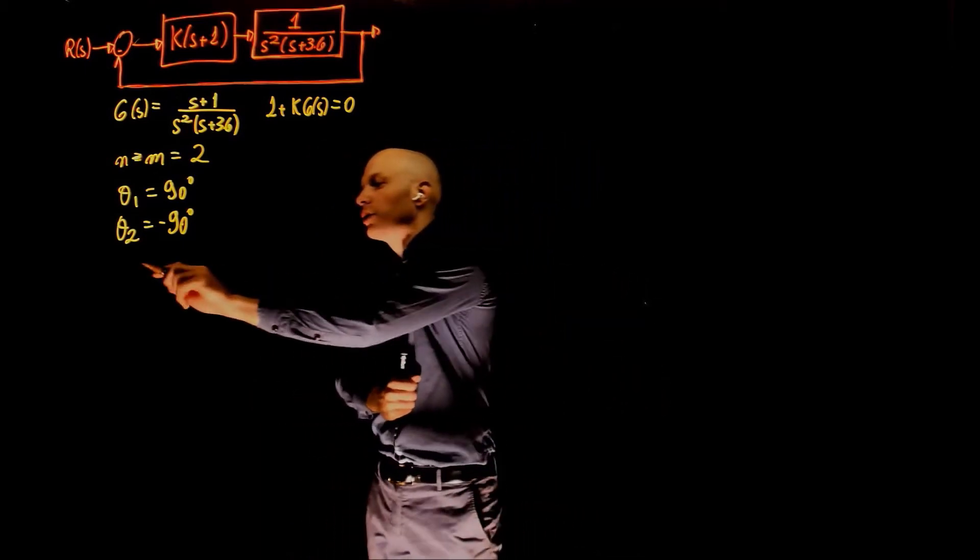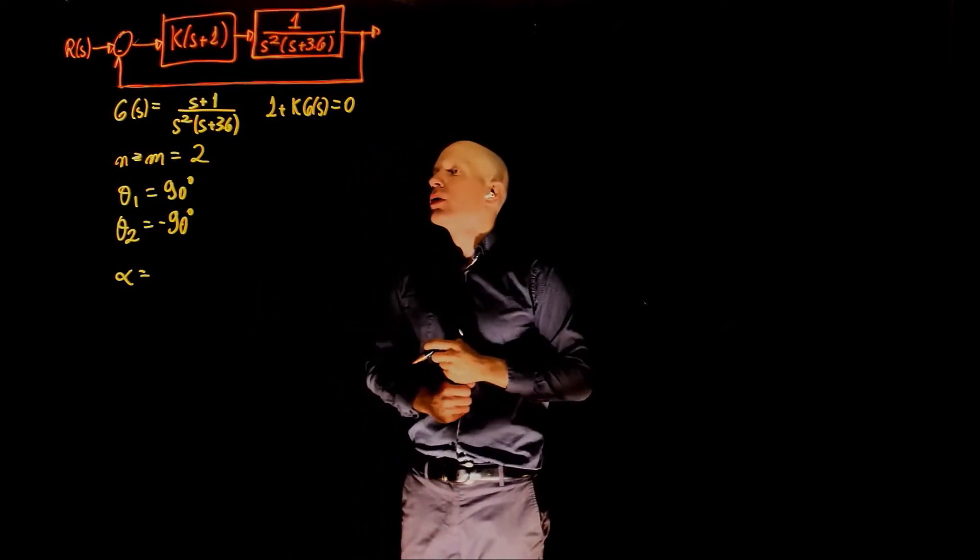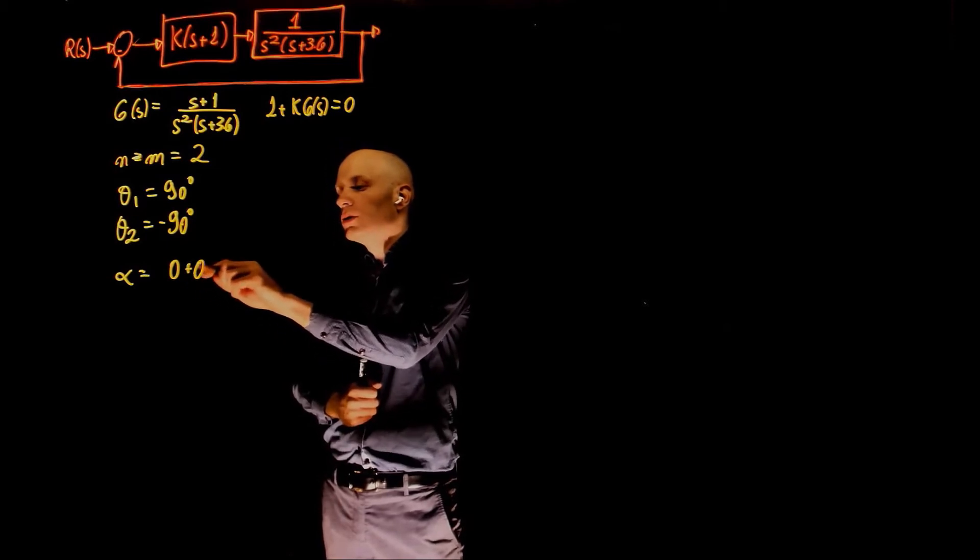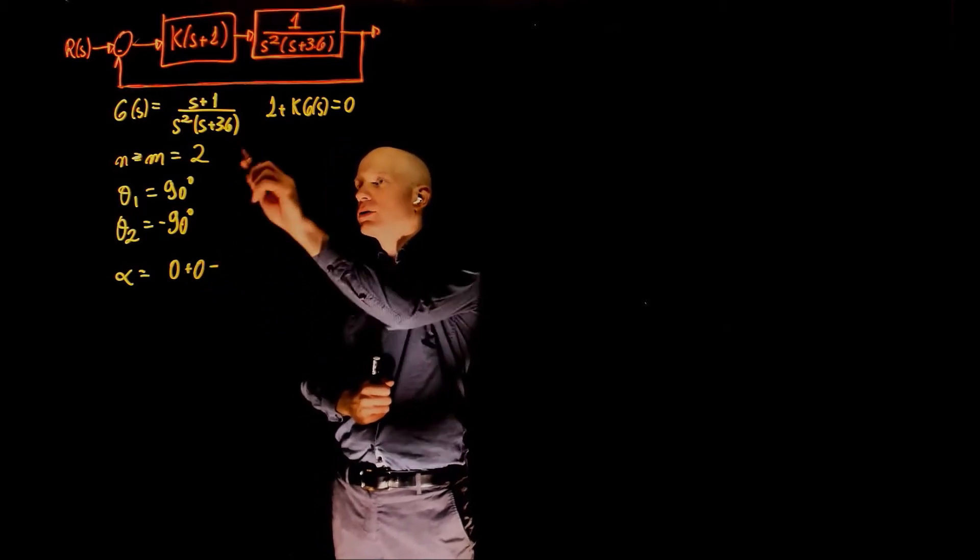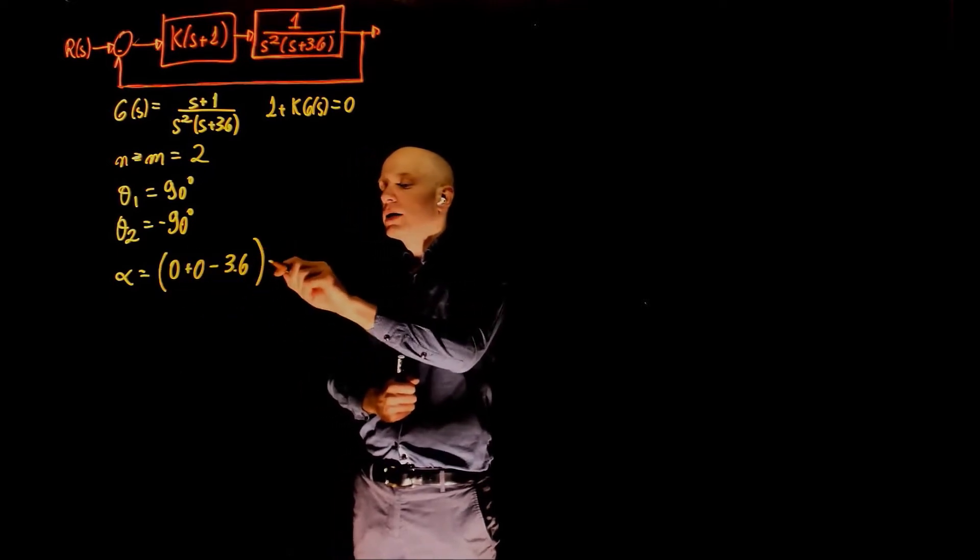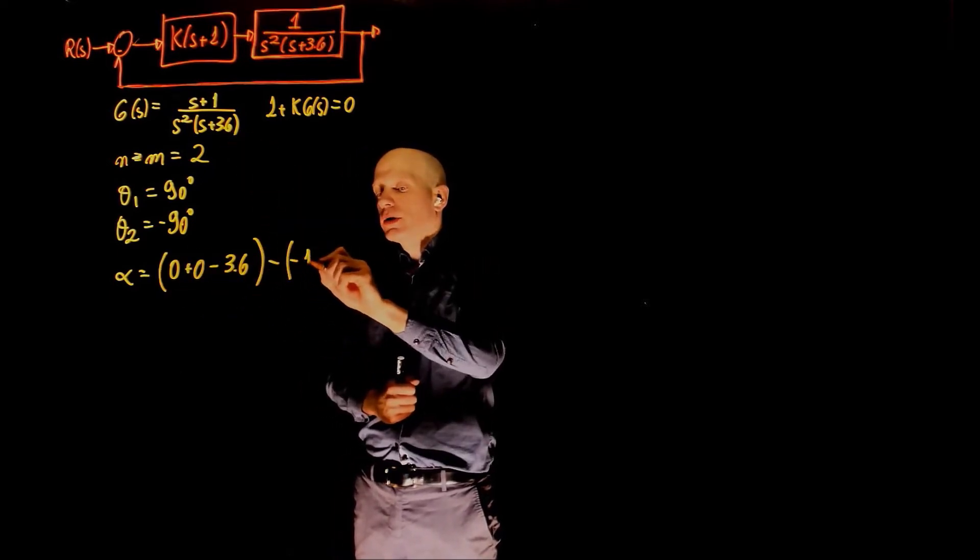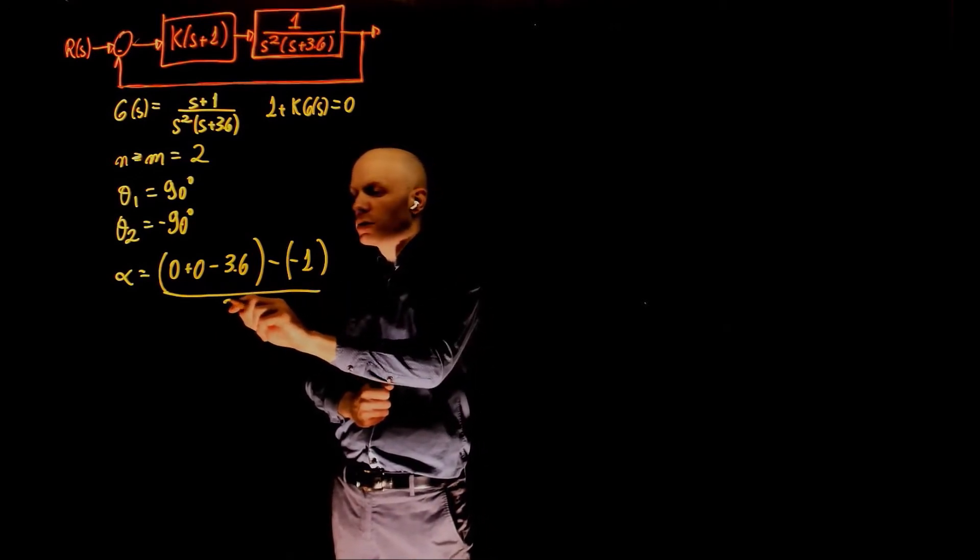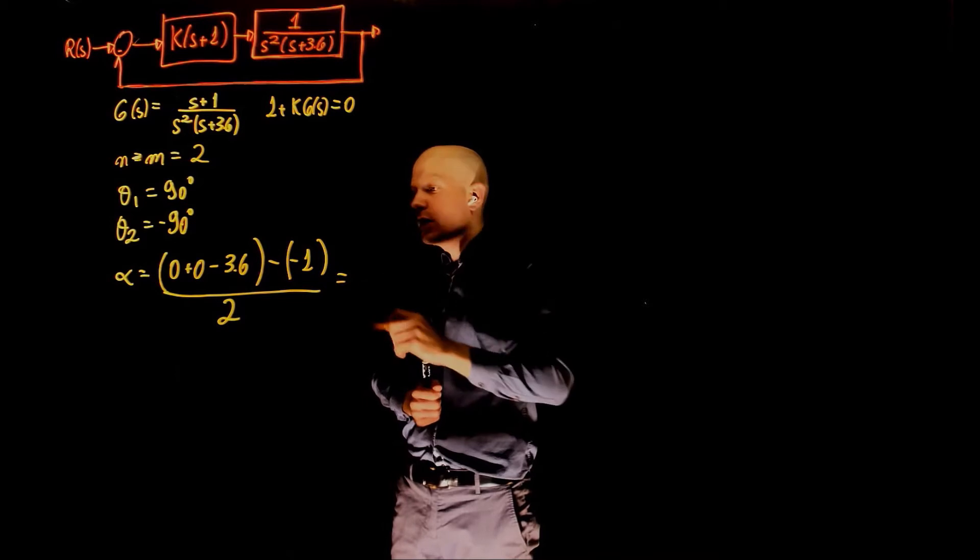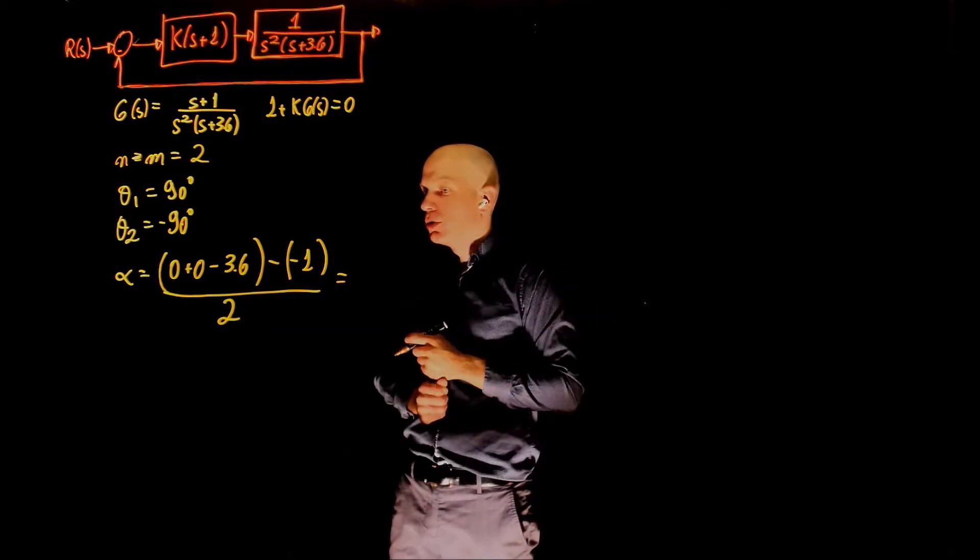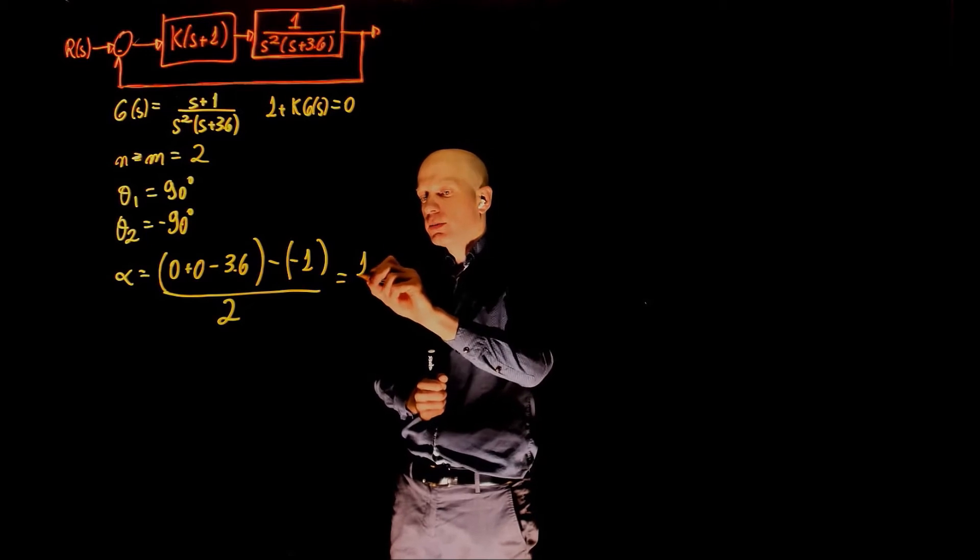The centroid of these asymptotes are located at sum of all poles, 0, 0, plus 0, minus 3.6, that's the location of the other pole, minus all zeros, negative 1, divided by n minus m, that is 2. The result here is 3.6 plus 1, 2.6 divided by 2 is 1.3, negative 1.3.